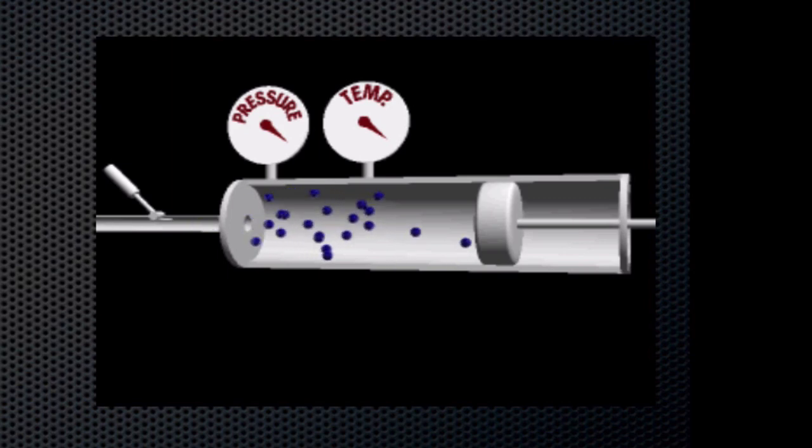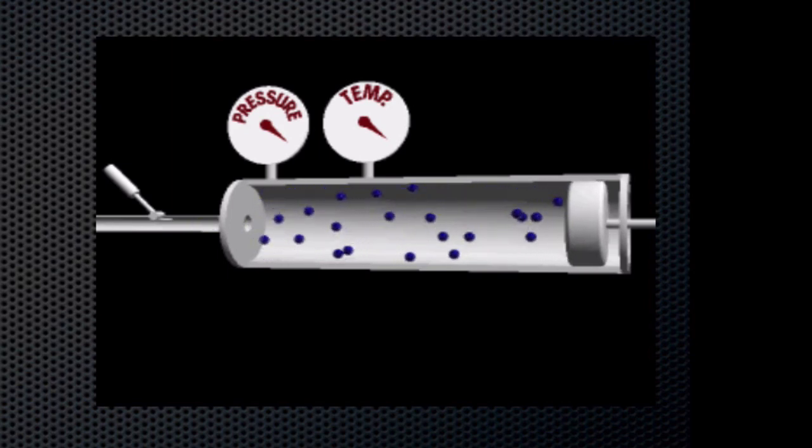With pressure and temperature held constant, additional atoms can be added to the cylinder. This results in an increased volume in the cylinder. If we double the number of atoms, the volume will double under these conditions.